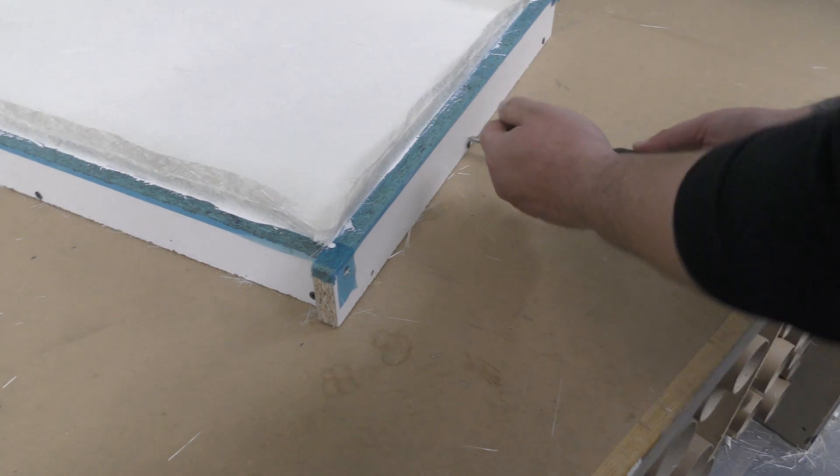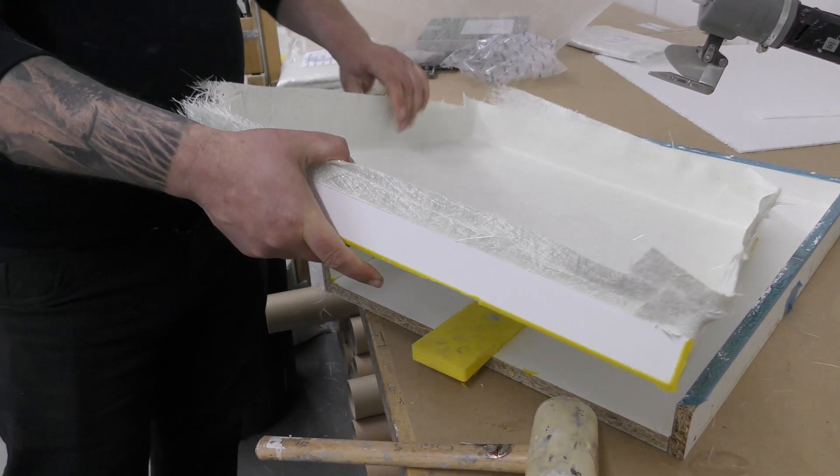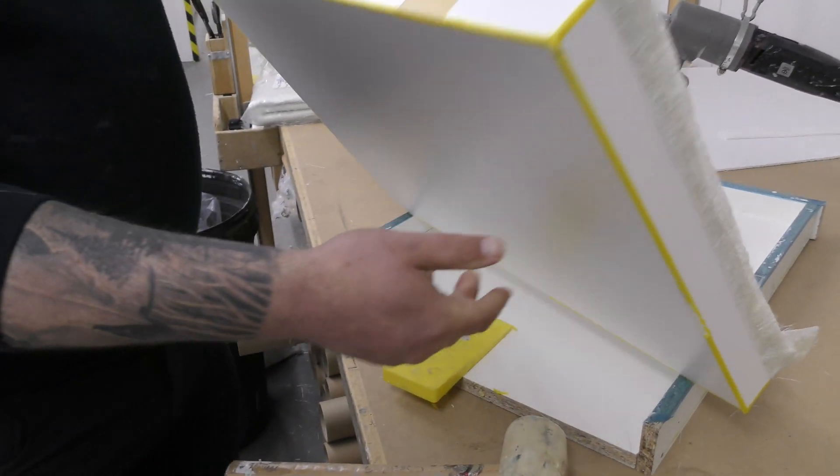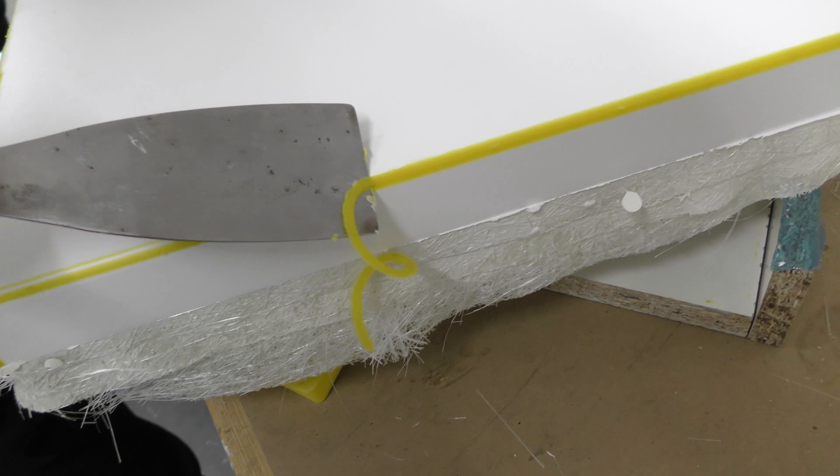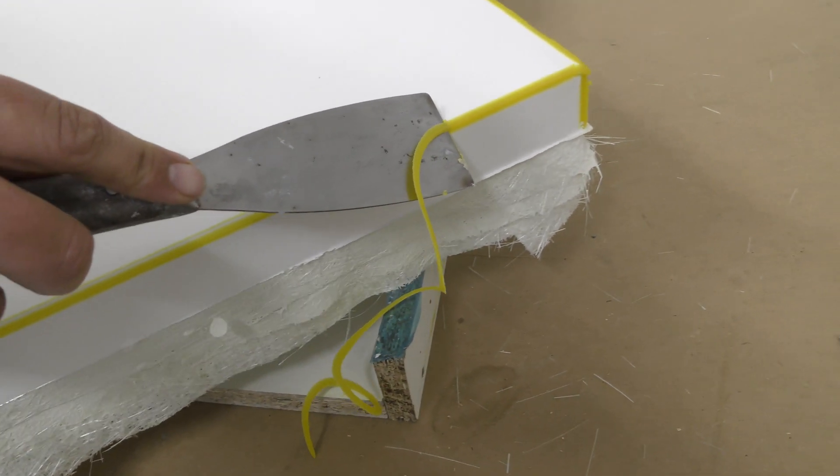Once the part has completely cured, it's a simple matter of unscrewing the screws from the edges and using a wedge to demold the part from our mold. You can then use a scraper or similar tool to easily remove the excess fillet wax.